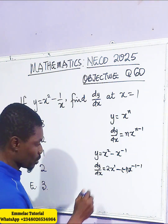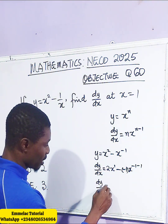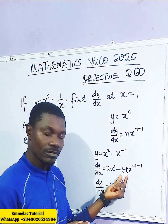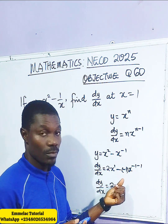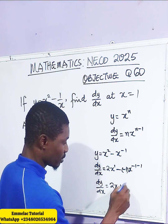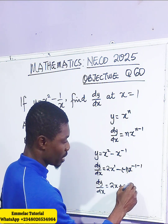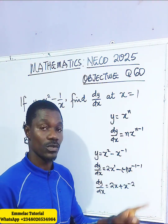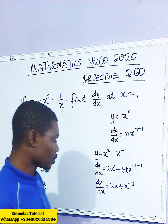So dy/dx equals 2x. Now, opening the bracket: minus times minus gives us plus, then 1 times x raised to the power of negative 2, because negative 1 minus 1 gives us negative 2. So dy/dx equals 2x plus x to the power of negative 2.